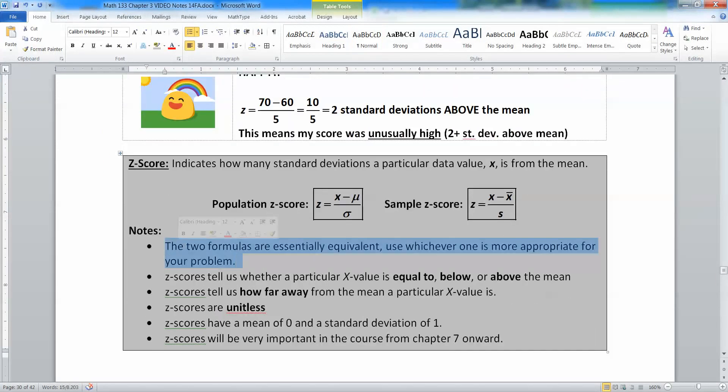The two formulas, like I just said, are essentially equivalent. Use whichever one is more appropriate for your problem. So if your data set is population, then use the one on the left. If it's sample, use the one on the right. It won't really change much one way or the other.